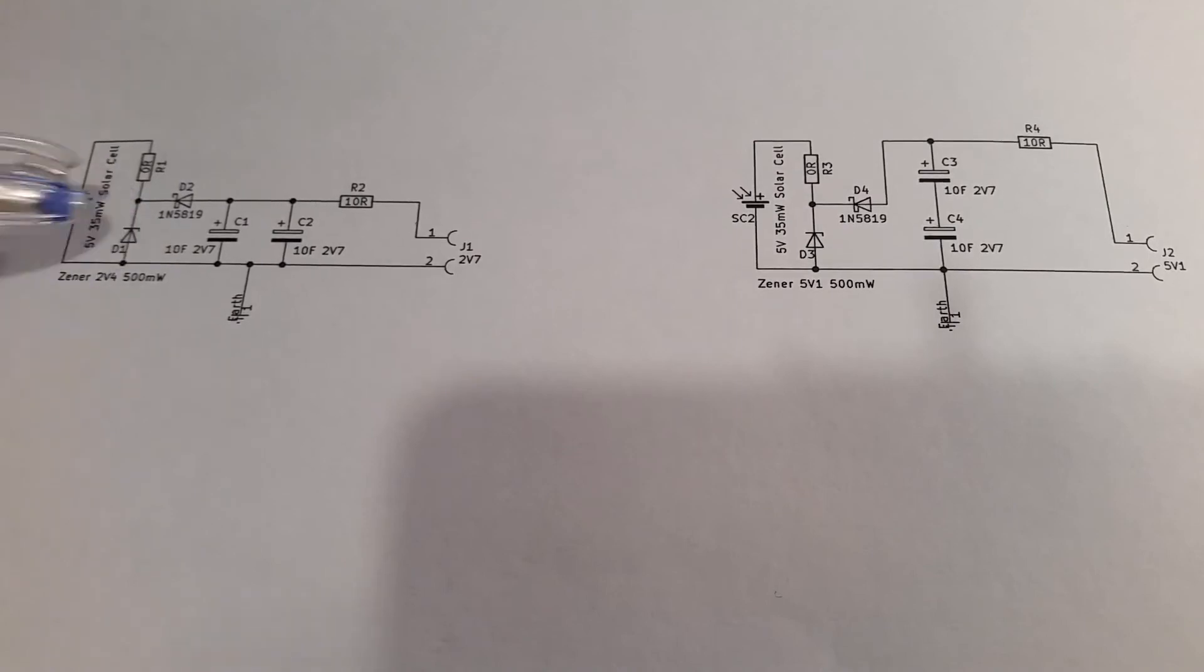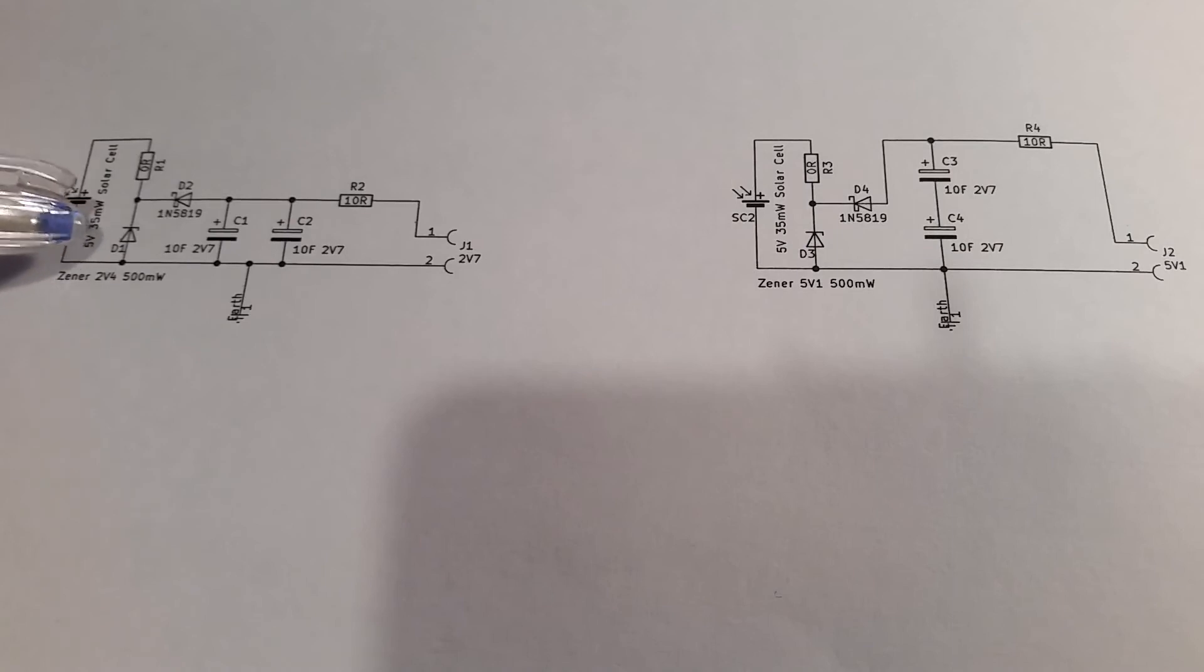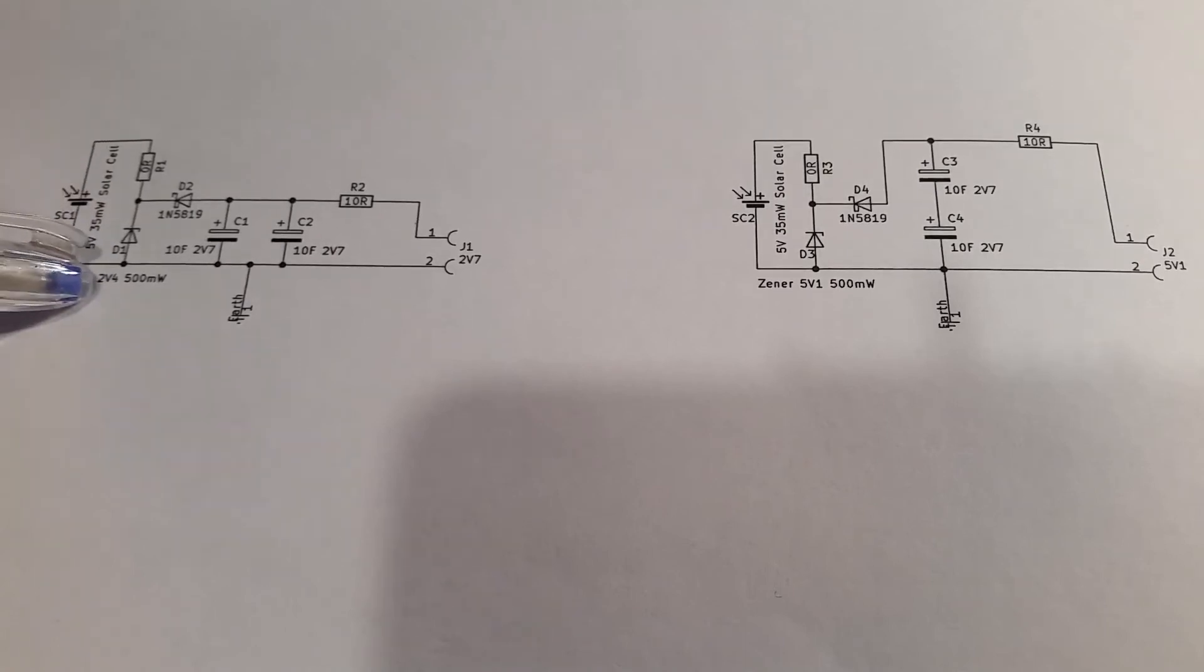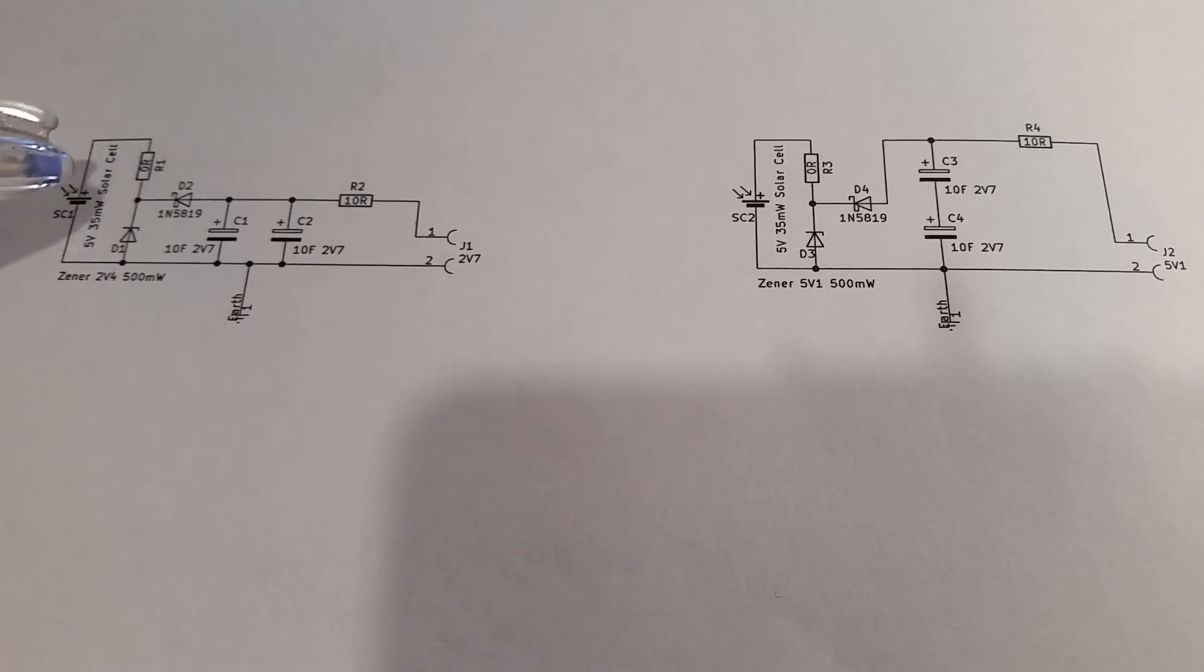I'm using a Zener diode, which is a 2.4 volt Zener diode. And I found that with Zener diodes, they usually give like a few points of extra voltage above what their rating is. So on the small solar panel I was getting 2.6 volts, and on the large solar panel I was getting 2.7 volts, which was ideal for charging the capacitors.